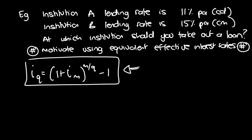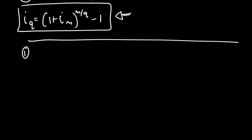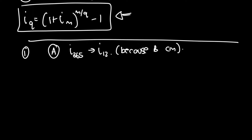There are a few ways to approach this since it doesn't specify exactly which to convert. My first approach: take Institution A, find I365, and convert it to I12 — because Institution B is compounded monthly. Then take that I12 and convert it to the nominal interest rate as a percentage per annum compounded monthly, so we can make a direct comparison with Institution B's listed rate of 15% per annum compounded monthly.